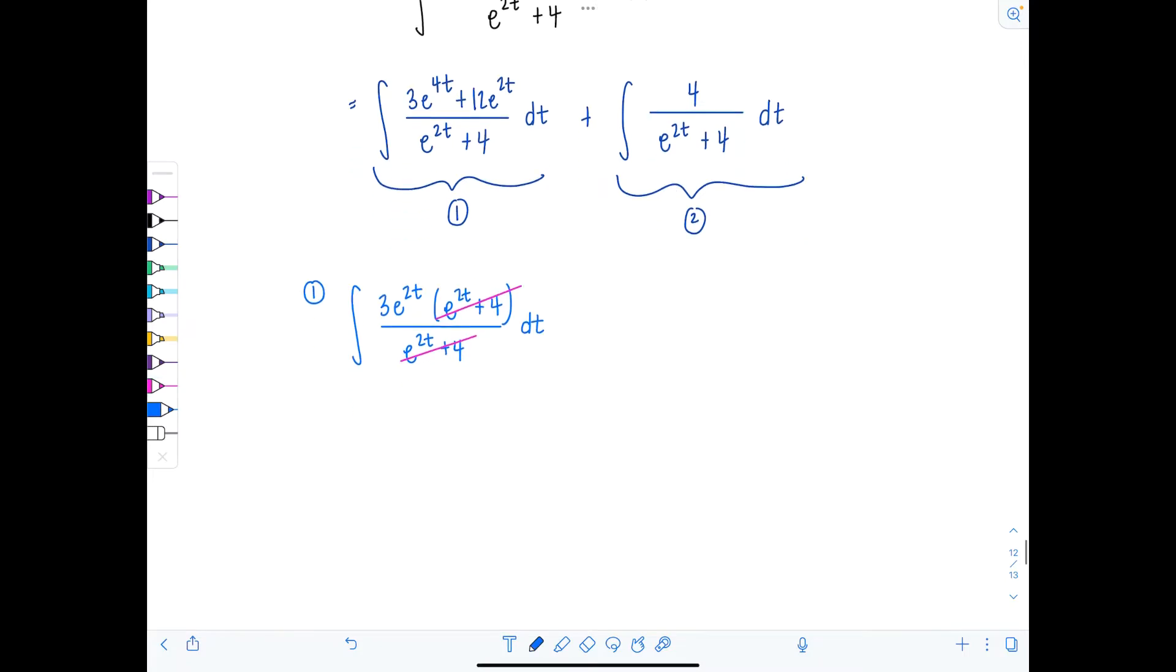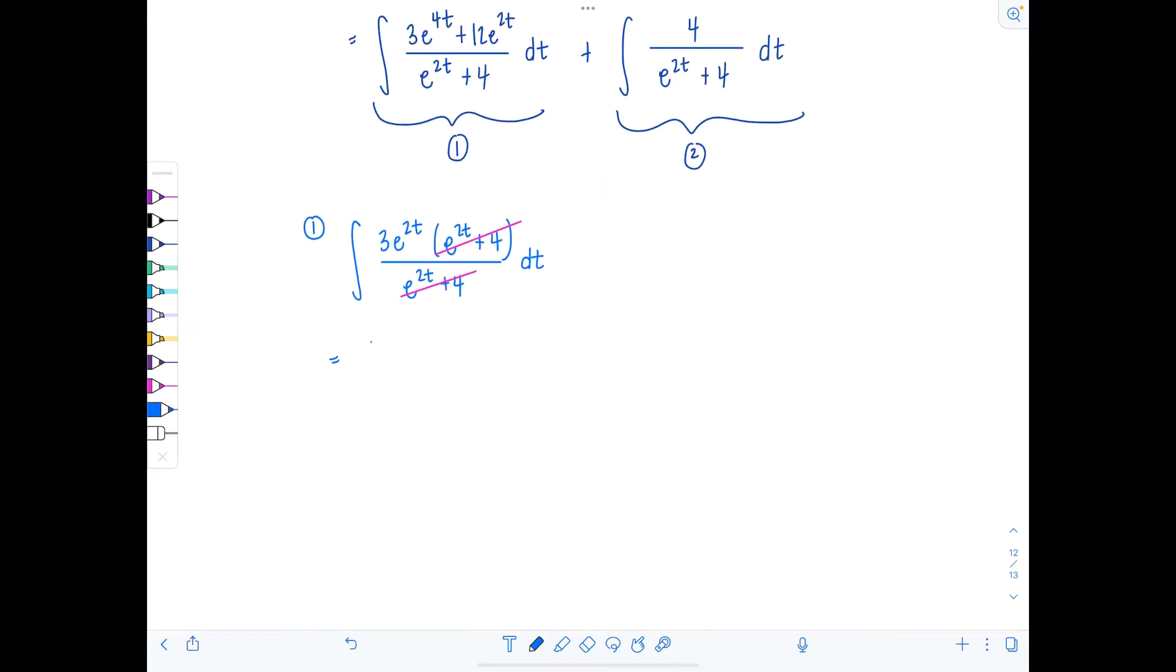And then now all I'm left to evaluate here is 3e to the 2t dt. And I don't think you need a u sub for this at this point, right? Since all we have is just some constant in front of t, we're going to divide by that constant. So integrating will give us 3 halves e to the 2t, and I'm going to say plus c1, since I have one more integral to evaluate. Integral 1 was no big deal.